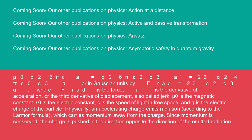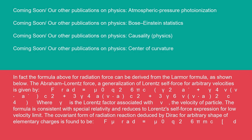Physically, an accelerating charge emits radiation, according to the Larmor formula, which carries momentum away from the charge. Since momentum is conserved, the charge is pushed in the direction opposite the direction of the emitted radiation. In fact, the formula above for radiation force can be derived from the Larmor formula, as shown below.